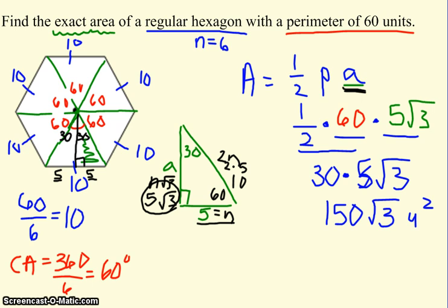Because it says find the exact area, I will leave my answer like this. I'm not going to do 150 times the square root of 3 in my calculator to see what decimal I get because my answer wouldn't be exact anymore. It would be approximated. So the area of that regular hexagon is 150 root 3 units squared.